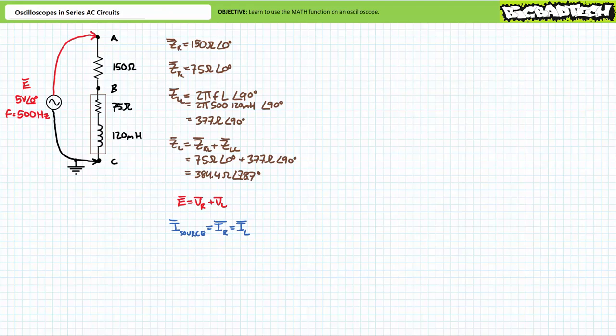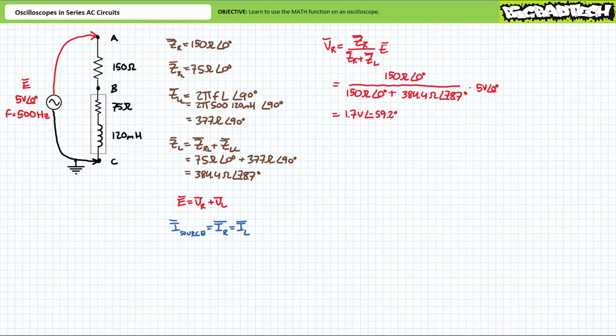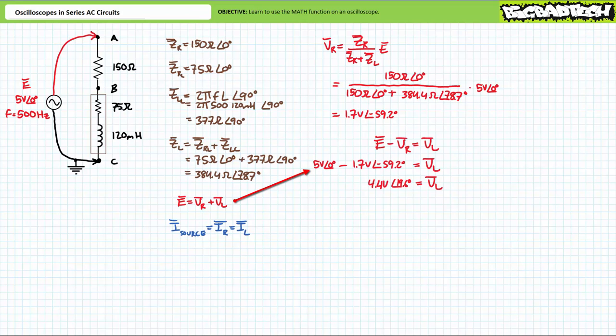Given there is a single path for current in this series relationship, source current equals current through the resistor, which equals current through the inductor. The AC voltage divider rule suggests VR equals 1.7 volts at an angle of negative 59.2 degrees. Using Kirchhoff's voltage law, VL equals E minus VR. Substituting our given values yields VL to be the remaining 4.4 volts at an angle of 19.6 degrees.